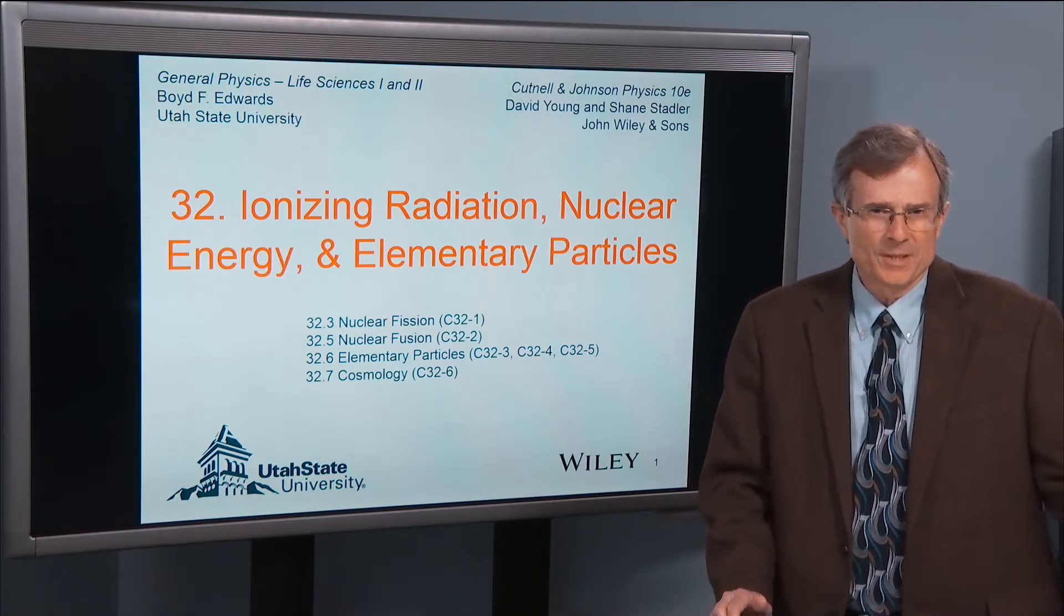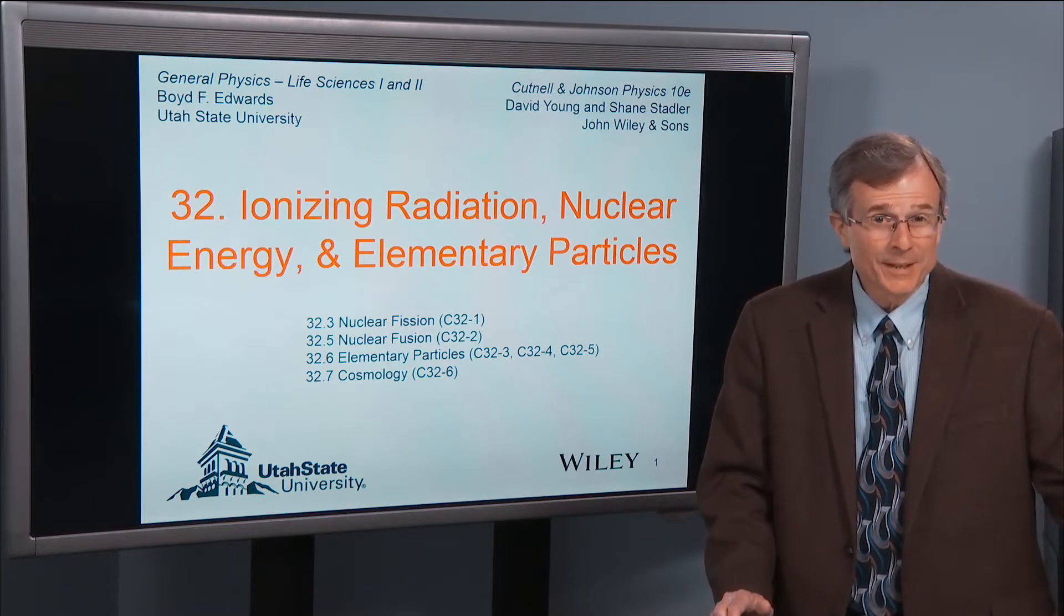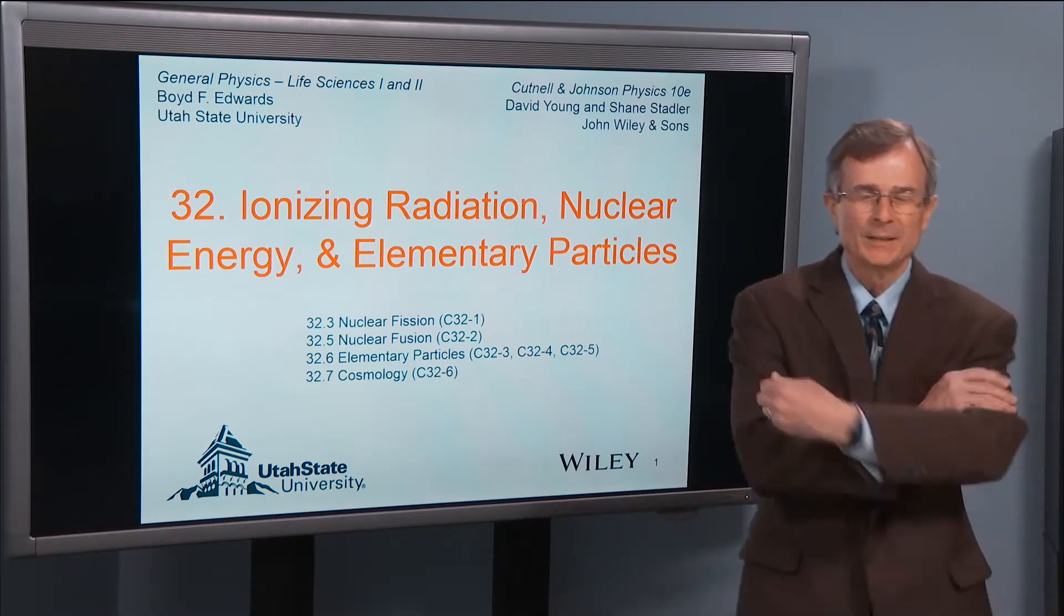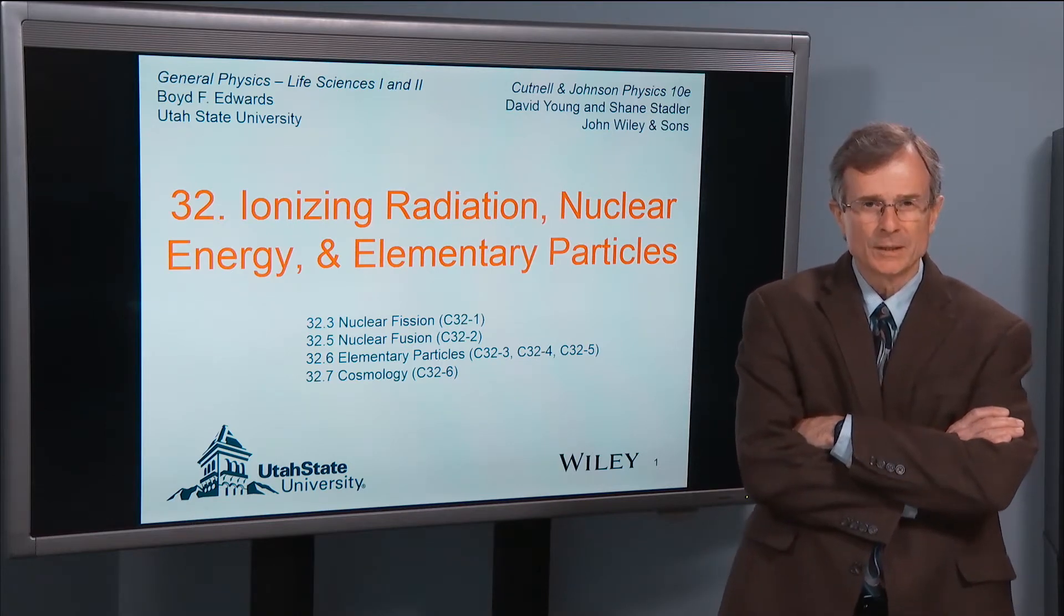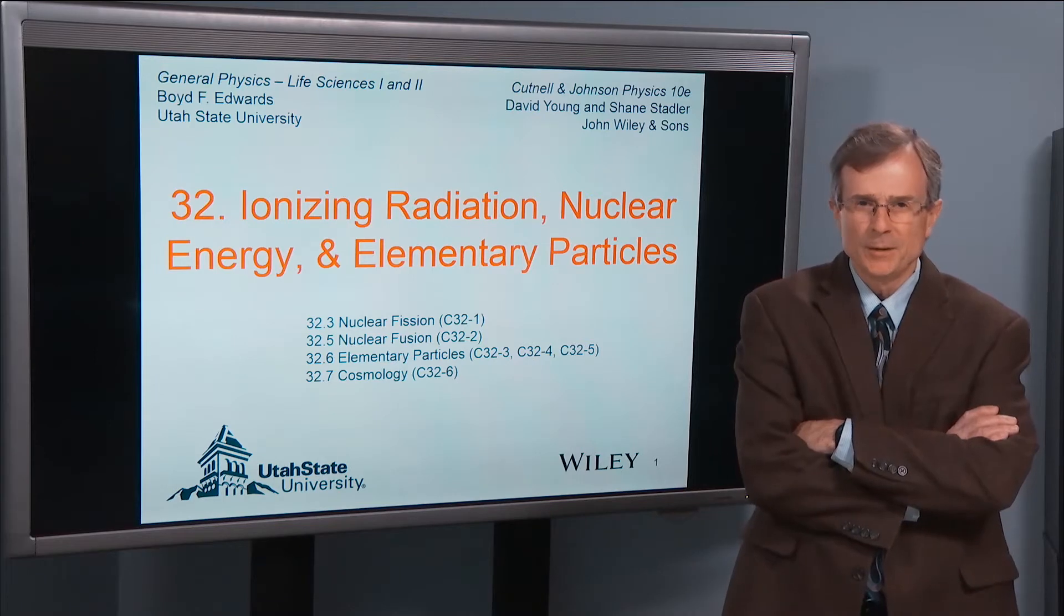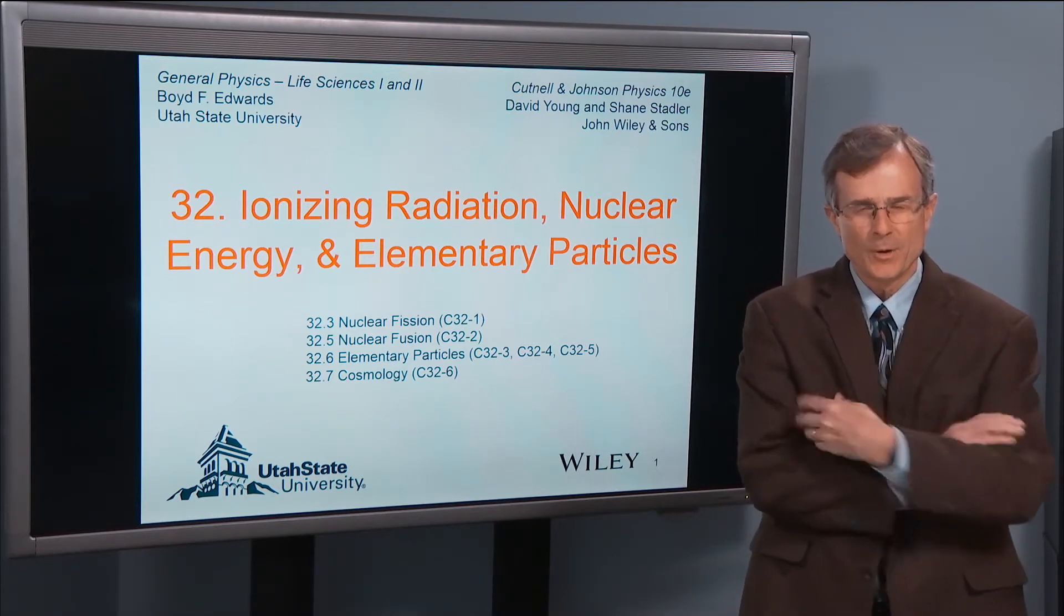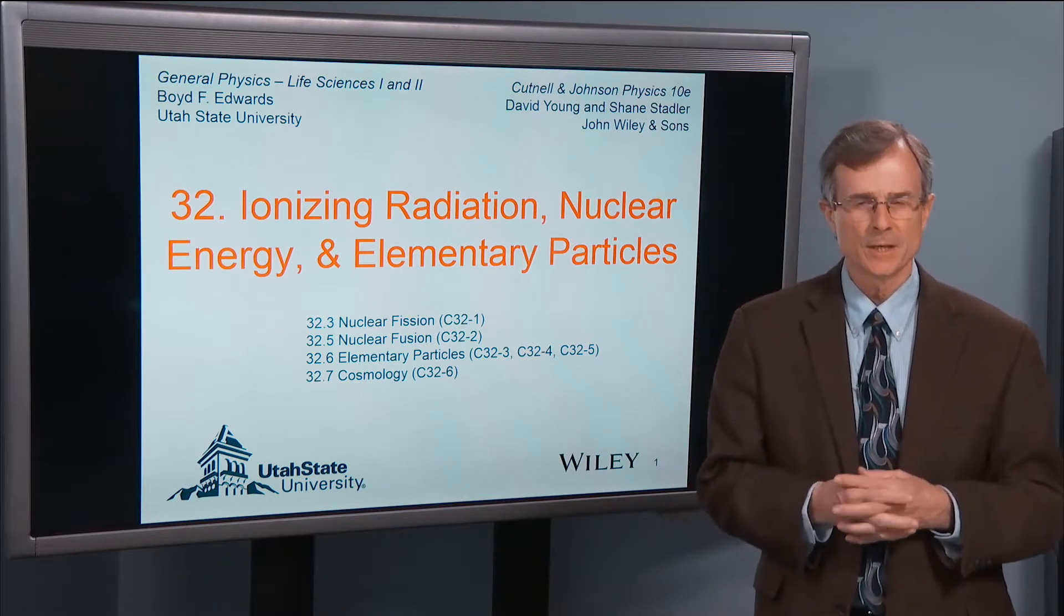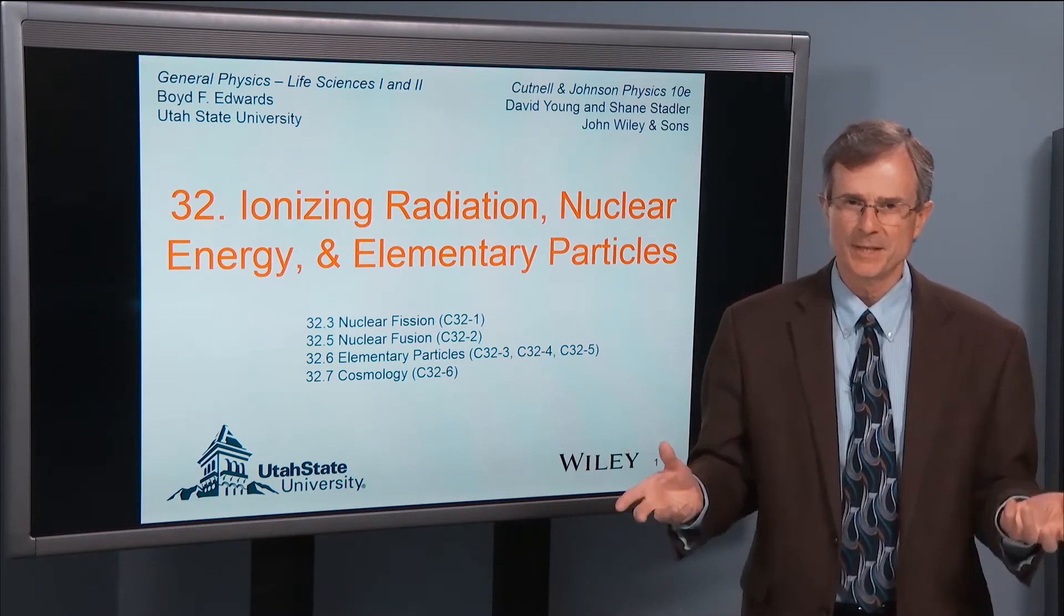There are 32 chapters in Cuttnell and Johnson, and this is the 32nd chapter. We are going to talk about things that really matter: cosmology, the fate of the universe, the beginning of the universe, and how the different forces—gravitational, electroweak, etc.—froze out as the universe has cooled over time and has expanded.